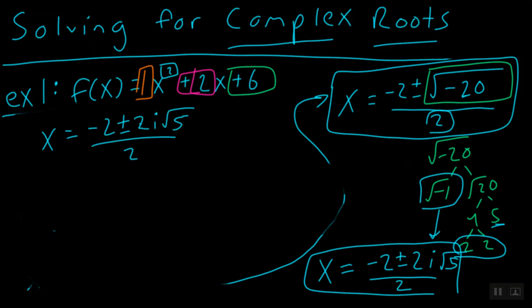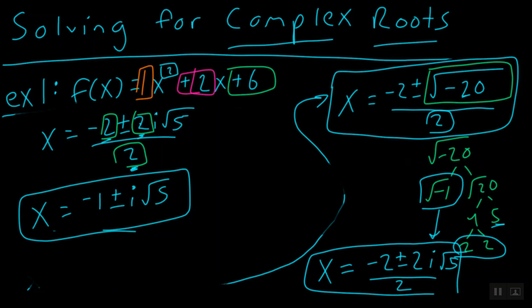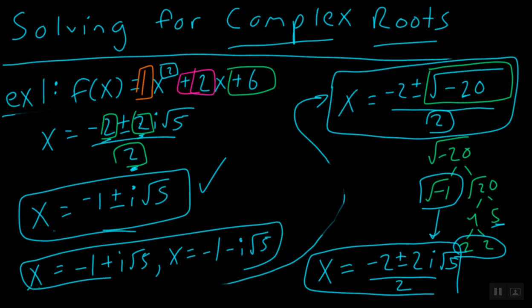And here's the very last thing. Whenever your number in the bottom can reduce both of these coefficients, you can actually do that. So here we have negative 2 divided by 2 is 1 plus or minus 2 divided by 2 is 1i square roots of 5. And this is as simplified as we can really get our answer. If you wanted to write it out as x equals negative 1 plus i square roots of 5 and x equals negative 1 minus i square roots of 5, I suppose you could, but this is what I would prefer to accept.